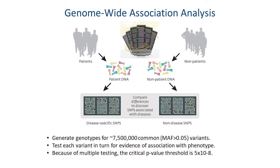We start with a saliva sample, extract the DNA, and apply it to a microarray. Within a day we can generate genotypes at about seven and a half to ten million variants across the genome. We then ask, for one variant at a time, whether a certain allele occurs at a higher frequency in individuals with alcohol use disorder compared to controls without a disorder, and we do this for every seven and a half million variants.